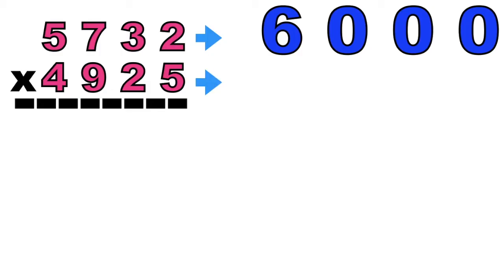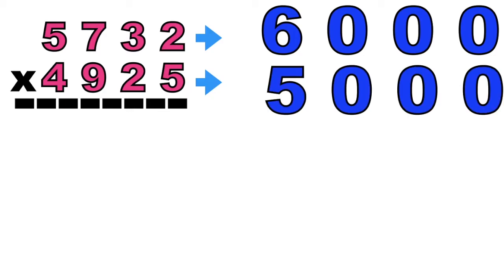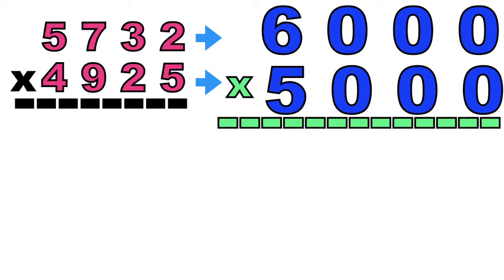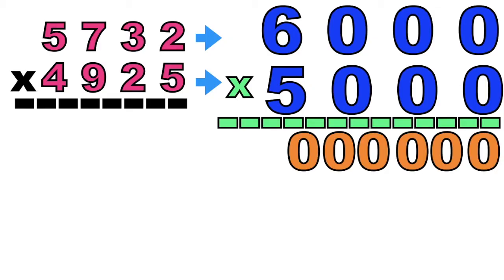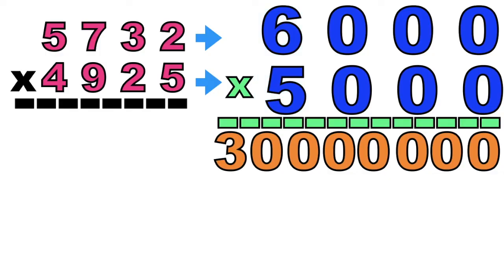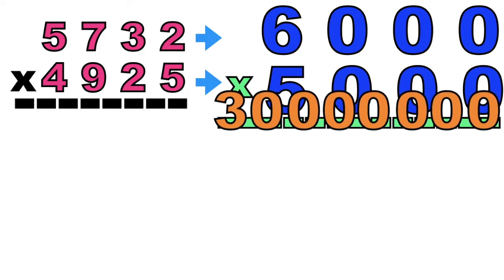Then let's proceed to the second factor, 4,925. It will become 5,000. So we can now multiply them. How many zeros are we going to write at the bottom? We're going to write six zeros since we have six zeros at the top. So we can now multiply the non-zero digits: 5 times 6 equals 30. So the estimated product of 5,732 and 4,925 is 30,000,000.